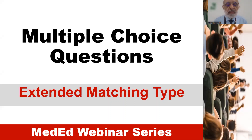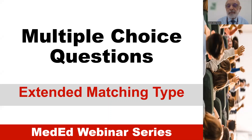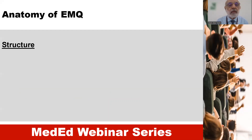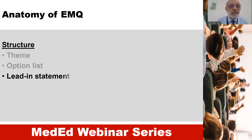After going through the details of BAQ, let us look at the characteristics of extended matching type of multiple choice questions. An EMQ consists of a theme, option list, lead-in statement, and stem.